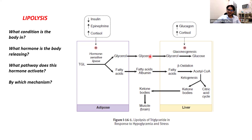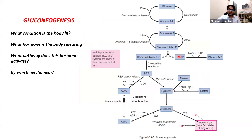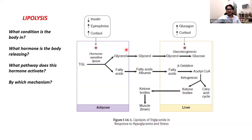Lipolysis going to the adipose tissue in starvation conditions. What condition must the body be in for lipolysis? The body must break down fat — you should be fasting or in starvation. What hormones are active? Cortisol, epinephrine, glucagon. Epinephrine and cortisol activate an enzyme called hormone-sensitive lipase by phosphorylation. This breaks down triglycerides in the adipose tissue into glycerol and fatty acids. The glycerol goes to the liver and can be made into glucose by gluconeogenesis — stimulated by glucagon and cortisol at the gene level.